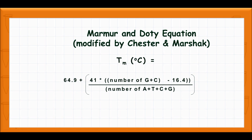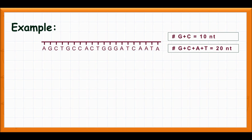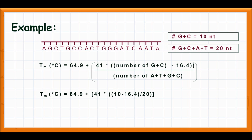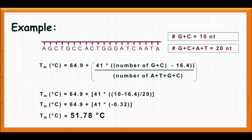The Marmor and Doty equation estimates the melting temperature based on the number of guanine and cytosine in the primer and the primer length. Let's have an example. Look at the following primer. The number of guanine and cytosine equals 10 nucleotides and the primer length equals 20 nucleotides. Substitute both values and do simple calculations to solve the equation.